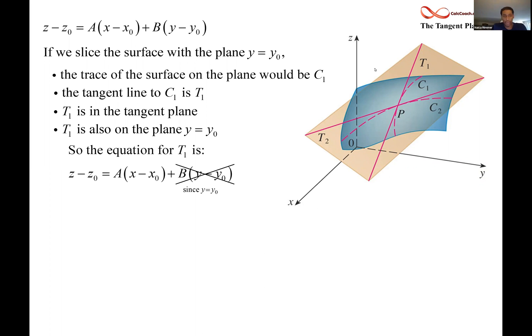At y equals y naught, the whole term for b goes away, and we have something that looks very similar to what we had on the last slide. Instead of being in terms of y and x, it's in terms of z and x. It says that z minus z naught is capital A times x minus x naught.